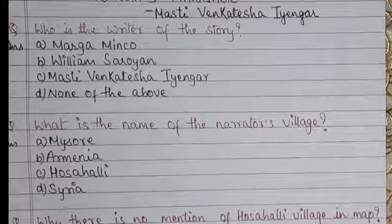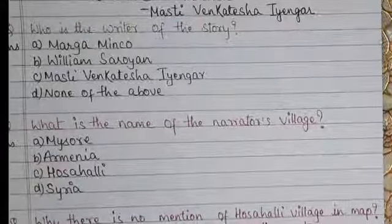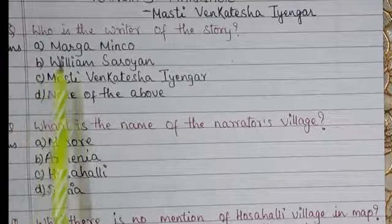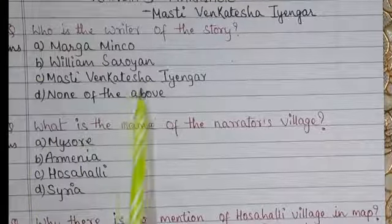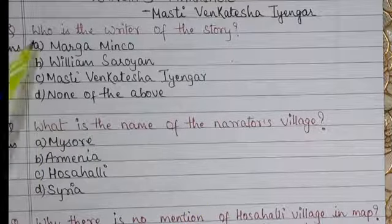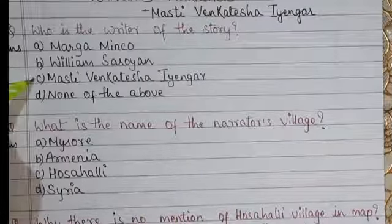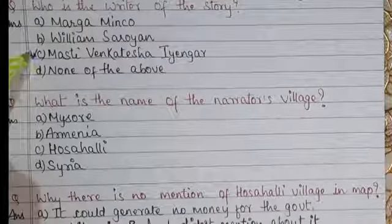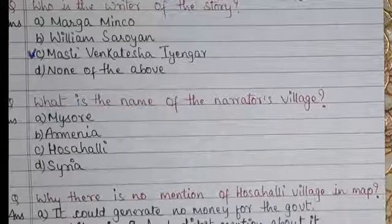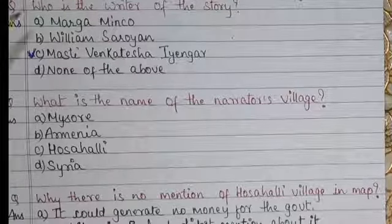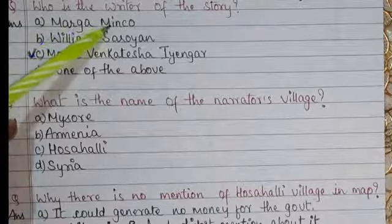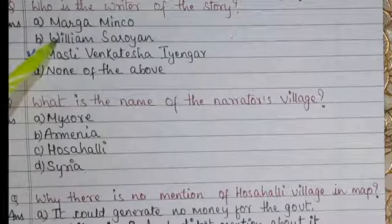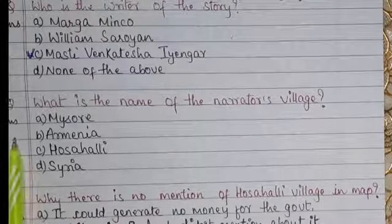Question number one: Who is the writer of the story? Option A: Marga Minko, Option B: William Saroyan, Option C: Masthi Venkatesha Ayengar, Option D: None of the above. The writer of Ranga's Marriage is Masthi Venkatesha Ayengar, which is Option C. Marga Minko is the writer of 'The Address' and William Saroyan is the writer of 'The Summer of a Beautiful White Horse'.